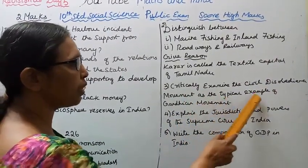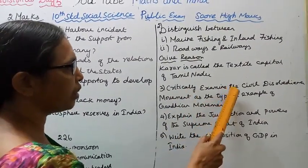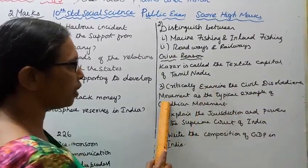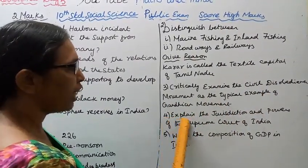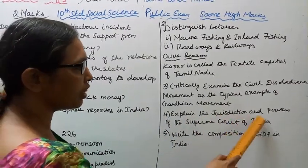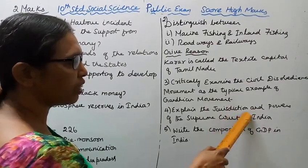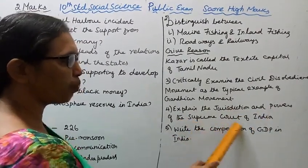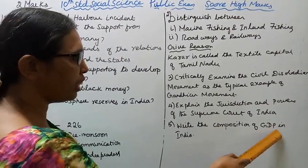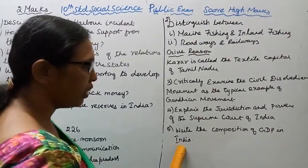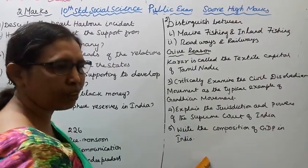Important questions: critically examine the civil disobedience movement as a typical example of the Gandhian movement. Fourth, explain the jurisdiction and powers of the Supreme Court of India. Fifth, write the composition of GDP in India.